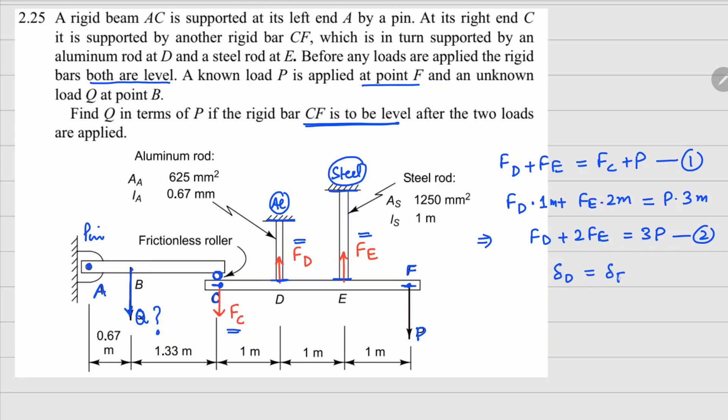Now how do we write delta D? It's going to be force in member D times the length of member D, which is 0.67 or two-thirds of a meter, divided by the elastic modulus of aluminum times the area, so this is 625 mm². This has to equal FE times length, which is 1 meter, divided by elastic modulus for steel, because this is made of steel, times area which is 1250 mm².